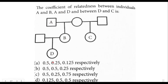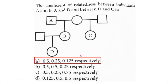D and C are half siblings because they share only the female parent. For half siblings, the coefficient of relatedness is 0.25. Wait — actually for half siblings r = 0.25, but the answer given here points to 0.125. So the correct answer is option A. This question was asked for four marks in Section C of the CSIR NET paper.